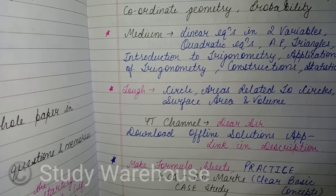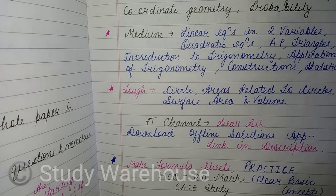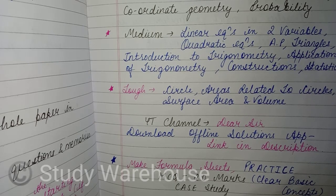Now, certain tips: if you want to score 100 or 95 plus, you should definitely make formula sheets. If you don't make formula sheets, you must always remember the formulas — formula sheets are the easiest way of learning all the formulas. Learn each and every formula, and then practice, because practice is very very important if you want to score good in maths.